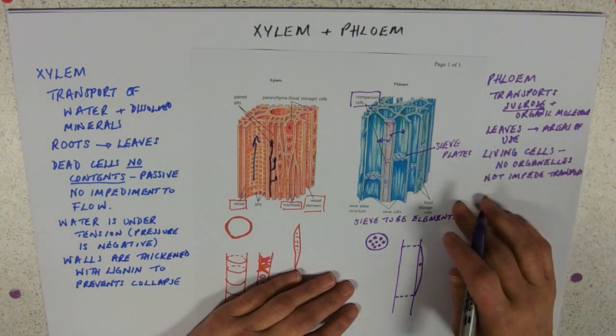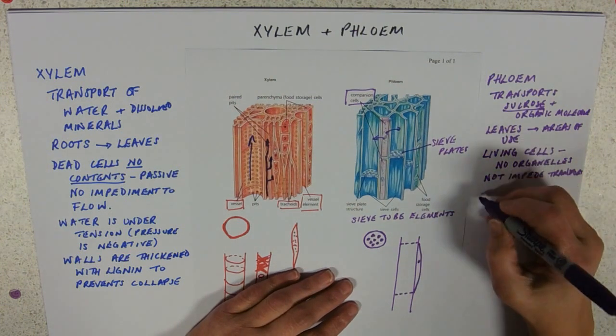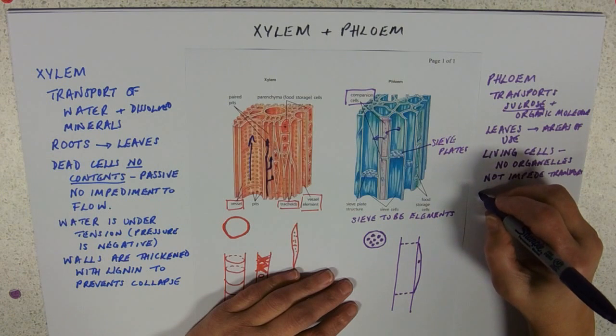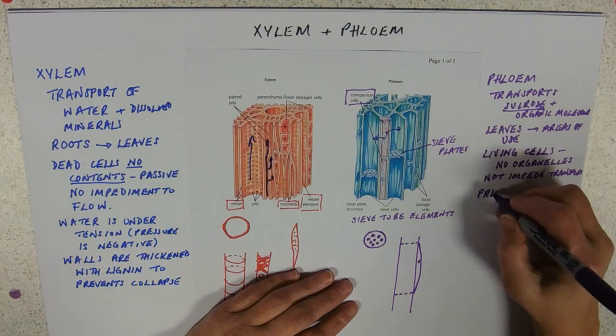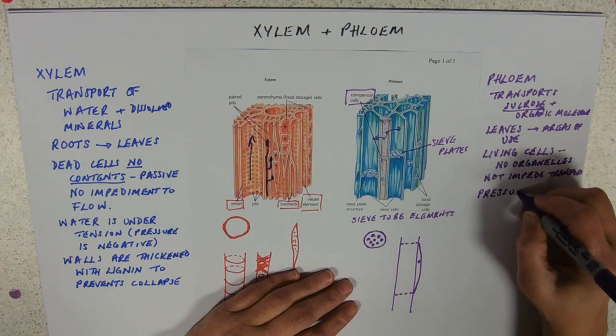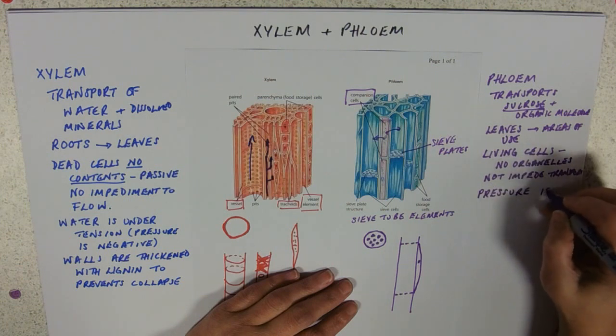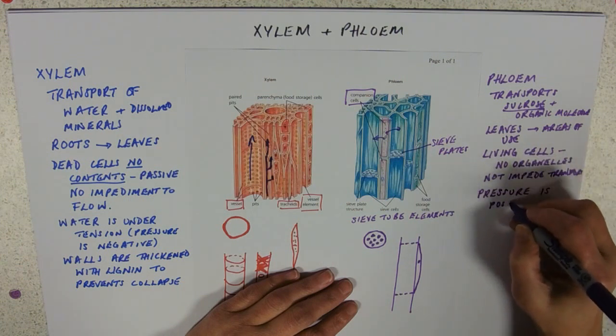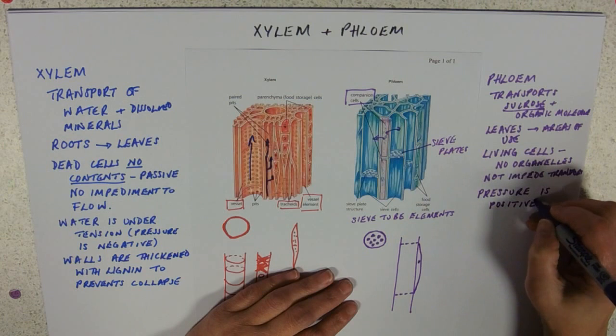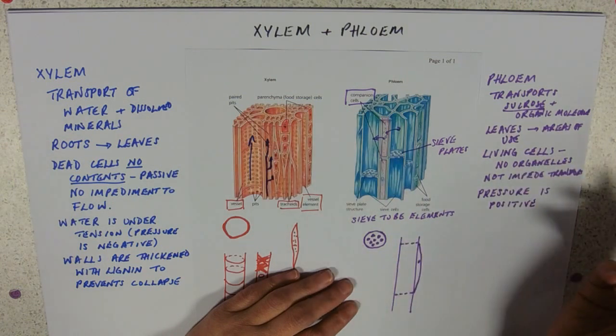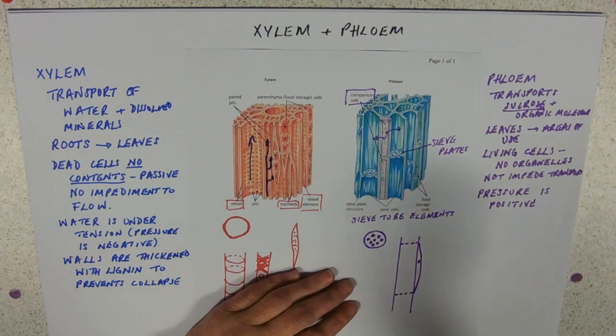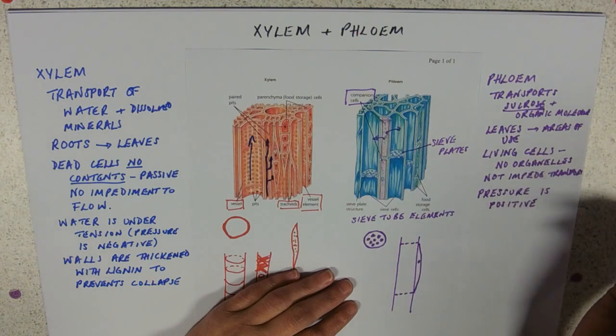So, these are carrying sucrose. So, the pressure in a phloem sieve tube, the pressure is positive. So, if you poked a hole into one, it would leak its contents out, which is something that's used to good effect by aphids when they're feeding.